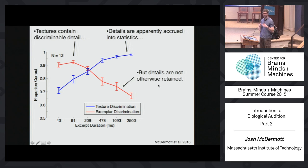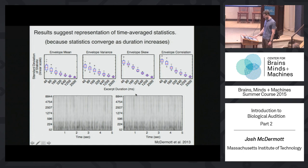The result provides evidence for a representation of time-averaged statistics. When the statistics are different, you can tell things are distinct. When they're the same, you can't. This relates to the phenomenon of the variability of statistics as a function of sample size.